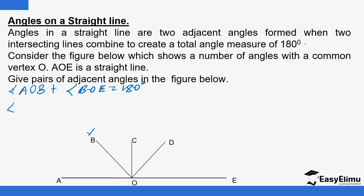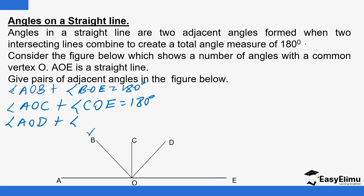So we have angle AOC plus angle COE, which equals 180 degrees. Similarly, angle AOD plus angle DOE also equals 180 degrees. Of course, if you sum all of them together — AOB plus BOC plus COD plus DOE — you still get 180 degrees.